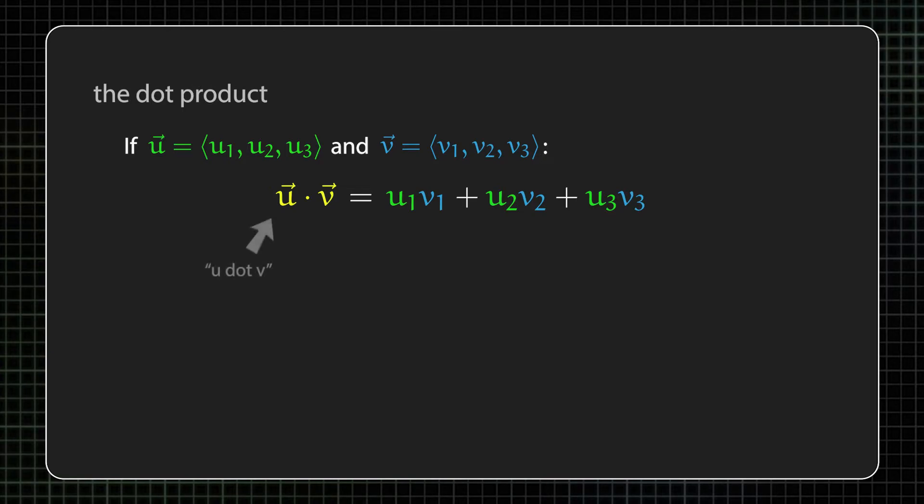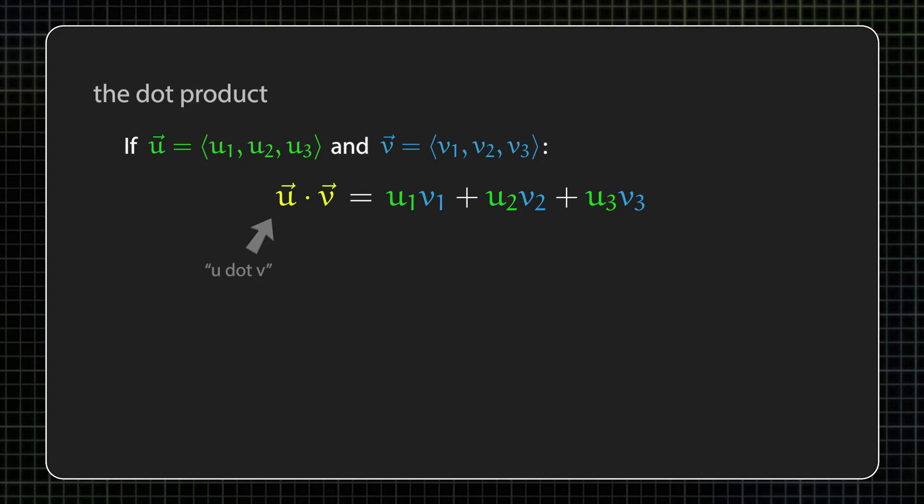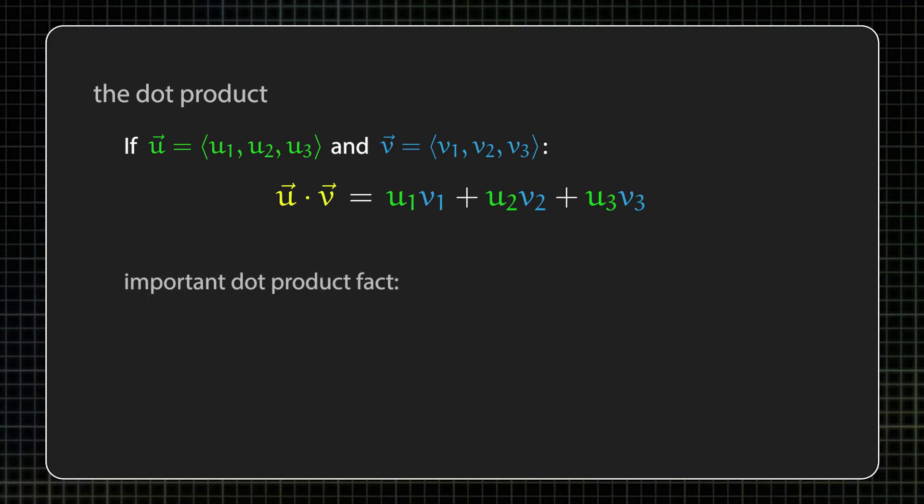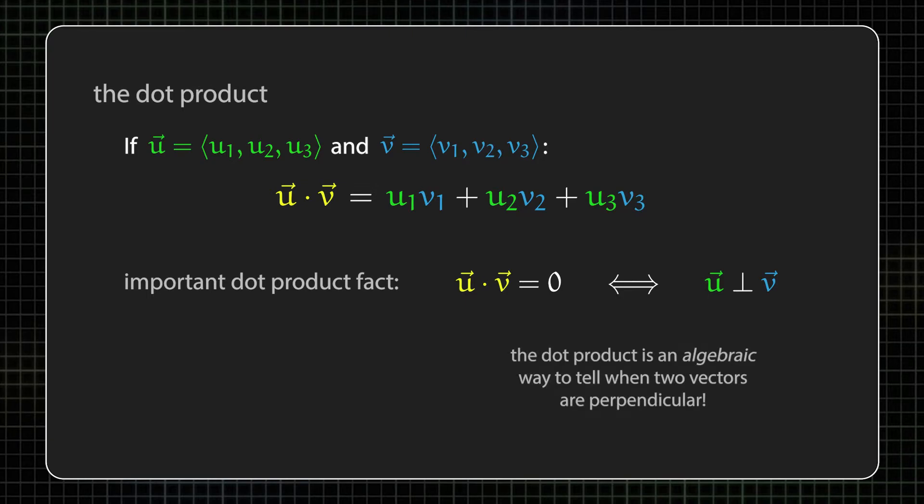The dot product is another way to combine two three-dimensional vectors together, except it's fundamentally different from the cross product in that its output is a scalar, or in other words, it's just a number. But the dot product has its own host of useful geometric applications. In particular, the dot product of two vectors is zero exactly when those two vectors are perpendicular.